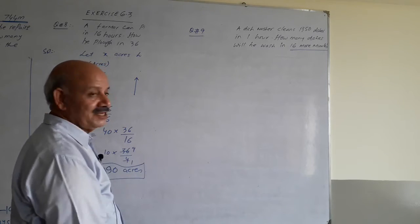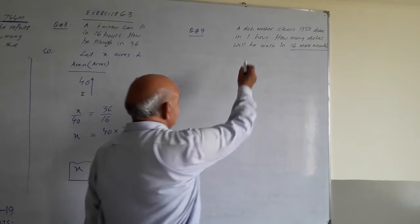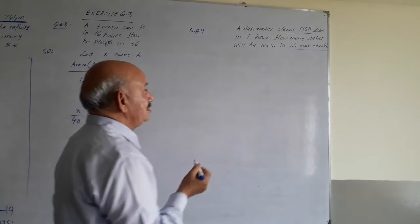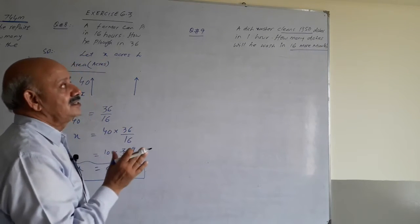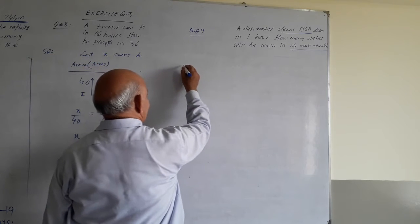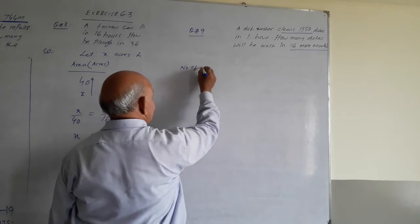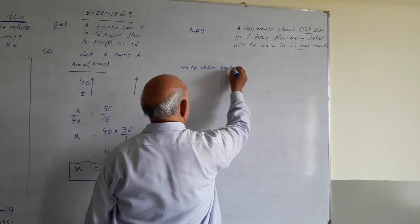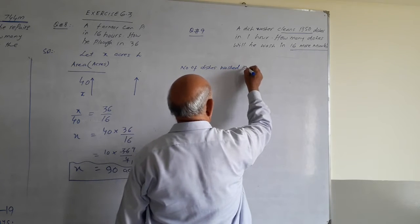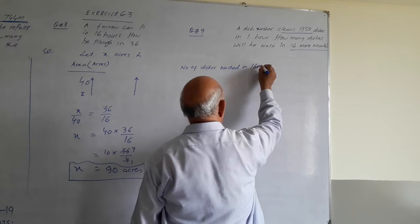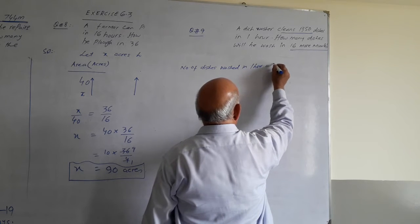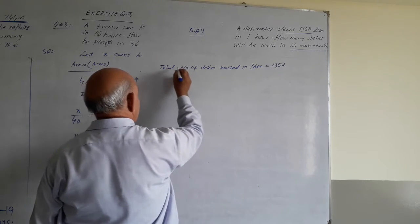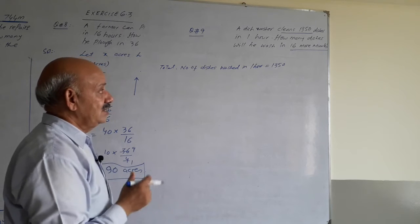It is a big technical question. It says that a dishwasher cleans 1350 dishes in one hour. Number of dishes washed in one hour. This is the total number of dishes washed in one hour.